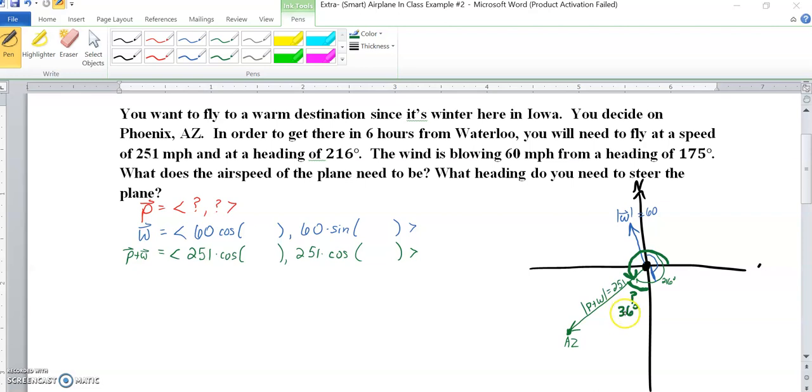So what we can do with that 36 degrees to help us find this theta is we can take 90, 180. We can take 270 minus 36. And 270 minus 36, let me change my pen, is 234 degrees.